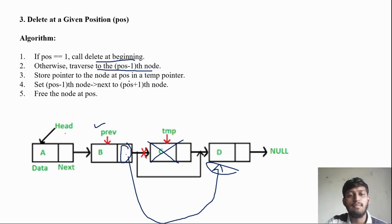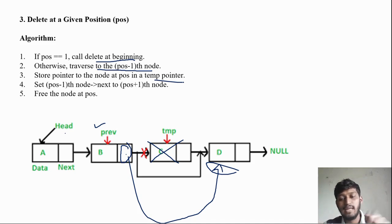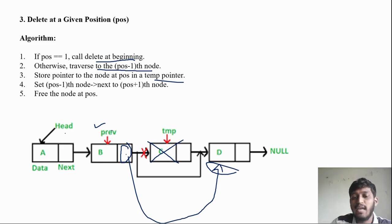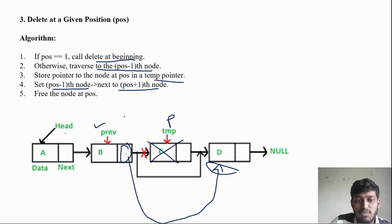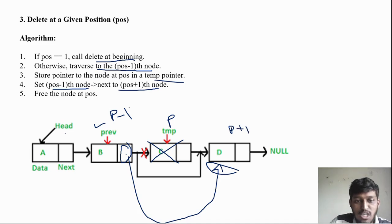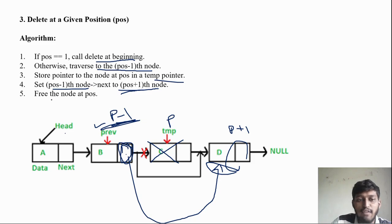Store a pointer to the node at the target position in a temp pointer. The previous node is at position minus 1, and the node after the deleted one is at position plus 1. You store the position plus 1 address into the position minus 1's next pointer, effectively bypassing the deleted node. Then free the node at that position.